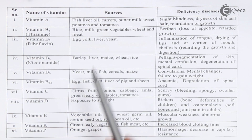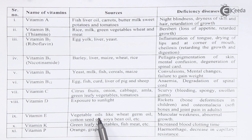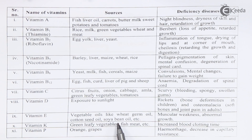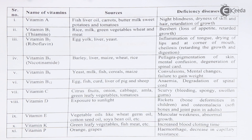Vitamin E is basically present in vegetable oils like wheat germ oil, cotton seed oil, and soybean oil. The deficiency disease it can cause is muscular weakness and abnormal growth.